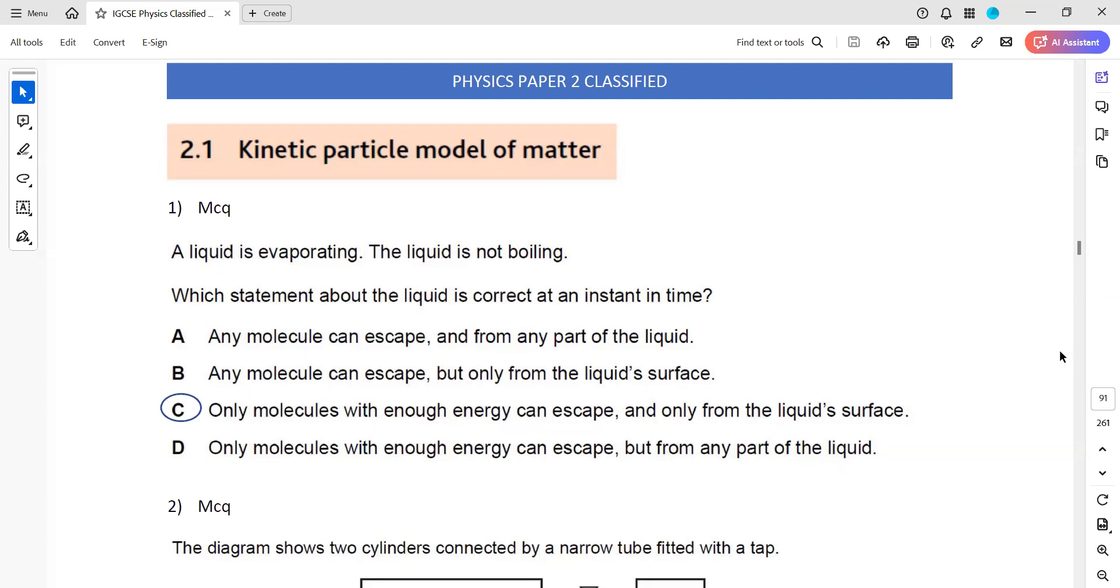So the first one, a liquid is evaporating, the liquid is not boiling. So what actually happened in evaporation? In evaporation, the most energetic molecules which are there at the surface, they gain energy from the surrounding, from their neighbors, and they escape.